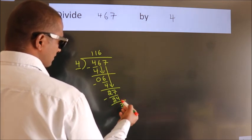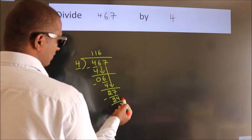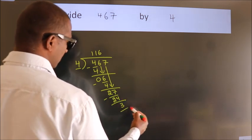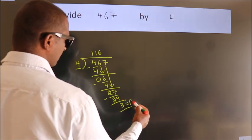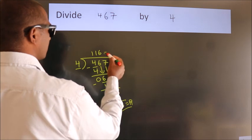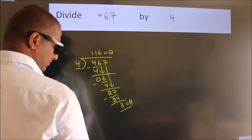After this, no more numbers to bring it down. So we stop here. This is our remainder. This is our quotient.